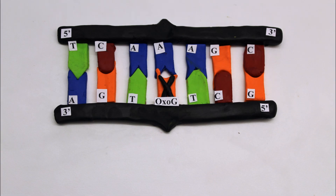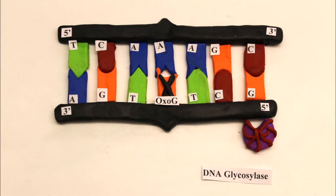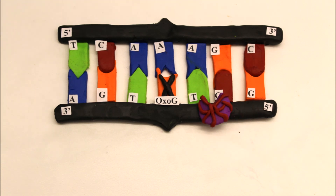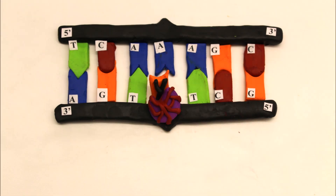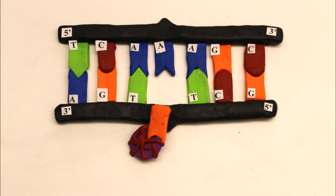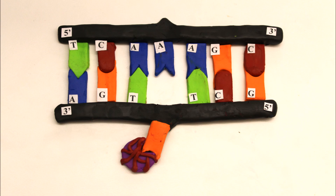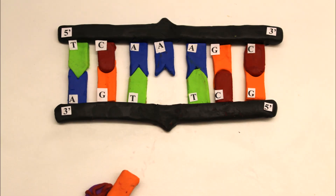To fix this, the oxo-G glycosylase enzyme binds to the DNA strand, scanning along the strand looking for damage. Once it finds and recognizes a damaged base, the oxo-G glycosylase flips the damaged base out of the double helix and into its specificity pocket. It then proceeds to cleave the glycosidic bond of the damaged base, leaving behind an AP site.